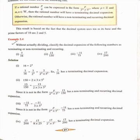So without actually doing the division, using the formula we can say that the given decimal expansions are terminating or non-terminating and recurring. This one has a non-terminating and recurring decimal expansion. See the third one: minus 11 divided by 75. So 75 can be written as 3 into 5 squared — 2 is not a factor. So it is a non-terminating and recurring decimal expansion, because it cannot be expressed in the form 2 raised to m into 5 raised to n. They usually give this pattern of question and ask whether the given fractions are terminating or non-terminating decimal expansions.